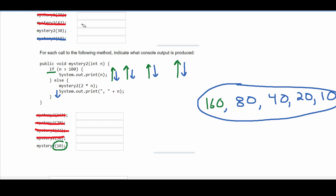The more correct way to look at this is to trace it visually. Starting with 10, we multiply by 2 to get 20, then 20 times 2 gives 40, then 40 gives 80, and 80 gives 160. So we can see that we start by printing 160, then go back to 80, then 40, then 20, then 10, producing the final answer 160, 80, 40, 20, 10.